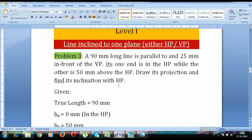So the true length in this case is going to be 90mm and its one end is in the HP. Since it is in the HP, then the distance of that particular point from the HP is going to be 0 as it lies in the horizontal plane.